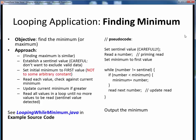Finally, the last standard looping application we'll consider is finding the minimum or maximum of some unknown quantity of numbers. Here we're showing the pseudocode for finding the minimum, but the approach for finding the maximum will be similar. We need to again establish a sentinel value, but this time we need to be a little careful and select a sentinel value that is clearly not any valid data. For example, maybe the usual minus one could now be a real value, so maybe negative 999 would be a better choice here. What we do now is read the first number in a priming read, then set the initial minimum value to that first number. We do not set the minimum to zero or any other arbitrary constant, because we could have every number we read being greater than that arbitrary constant, which would incorrectly fix the result to that constant. So we enter the loop, and as long as the number we read is not equal to the sentinel value, we keep executing this loop.